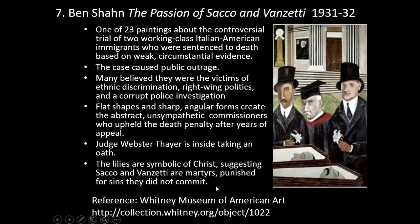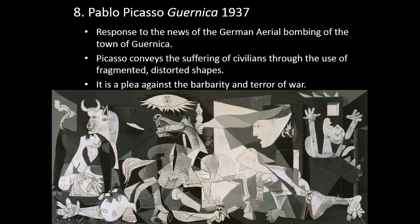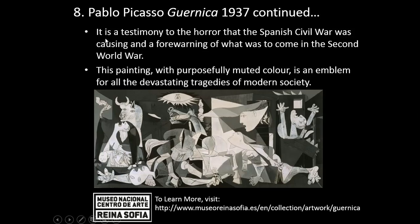Back in Europe, Cubism continues with Pablo Picasso's Guernica, 1937. This painting is a large mural in response to the news of the German aerial bombing of the town of Guernica. Picasso conveys the suffering of civilians through the use of fragmented, distorted shapes. It is a plea against the barbarity and terror of war — a testimony to the horror of the Spanish Civil War, which was Picasso's homeland, Spain — and a forewarning of what was to come in the Second World War. With purposely muted color, it is an emblem for all the devastating tragedies of modern society.